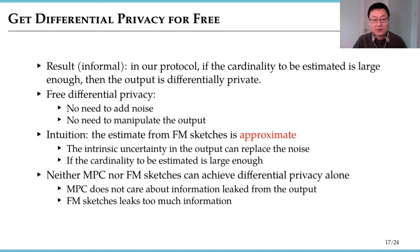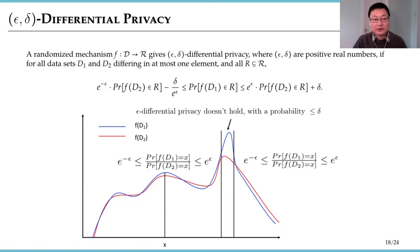Then how did we prove the protocol is differentially private? In general, to prove an algorithm that is differentially private, what we need to show is for two sets that differ in at most one element, the output distributions of the algorithm are close almost everywhere except a small probability.